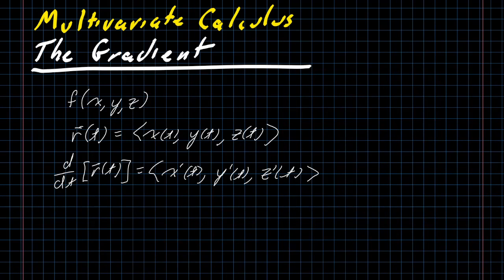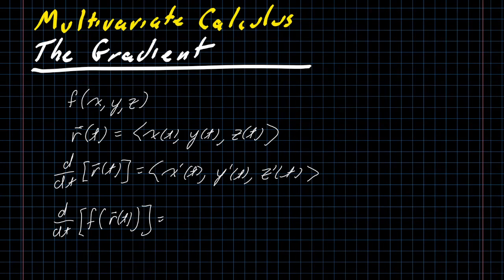And we learned much more recently that if you take the derivative with respect to t of your function f evaluated at r of t, so that's x of t, y of t, z of t as components or as coordinates, you get, using the chain rule, the partial of f with respect to x times x prime plus the partial of f with respect to y times y prime plus the partial of f with respect to z times z prime.